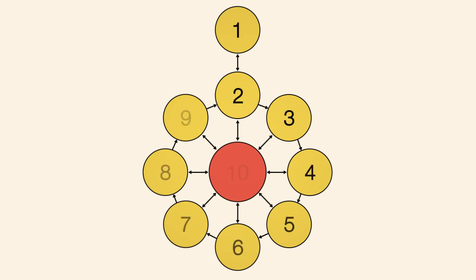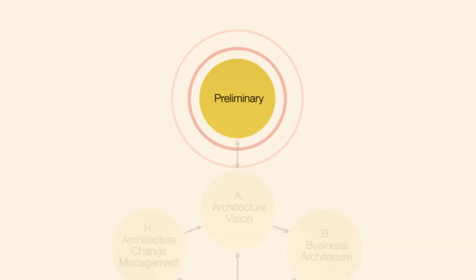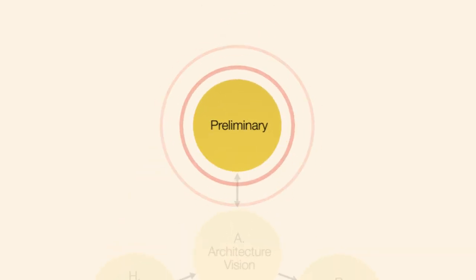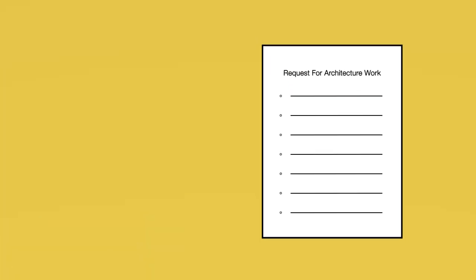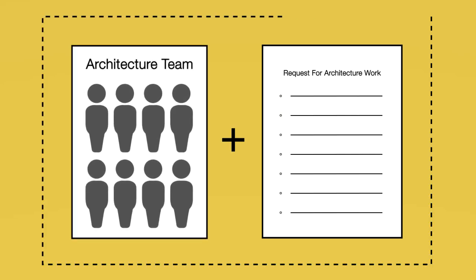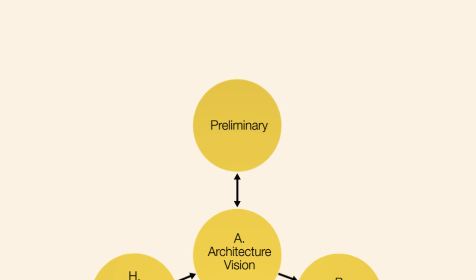The ADM describes ten phases which describe the architecture development cycle. The preliminary phase makes sure there is a well-defined request for architectural work and that the organisation and enterprise architecture team in particular have everything in place to fulfill that request.